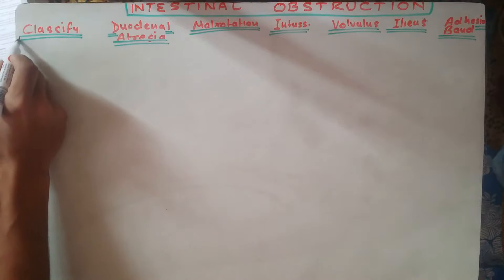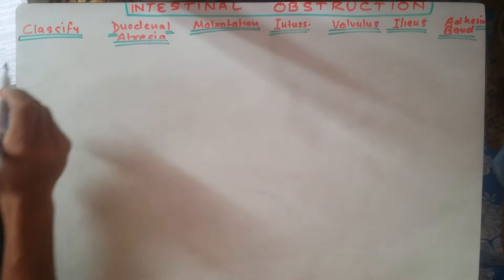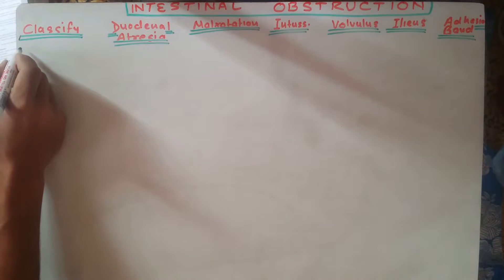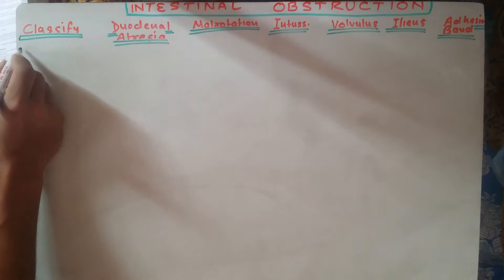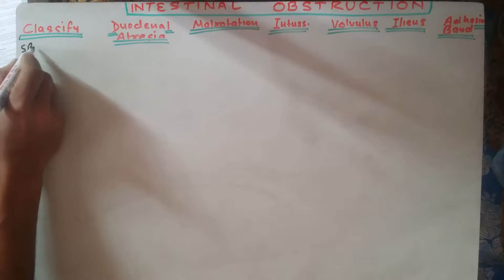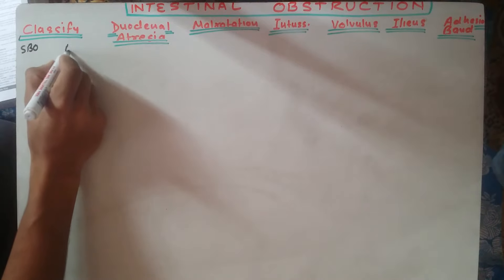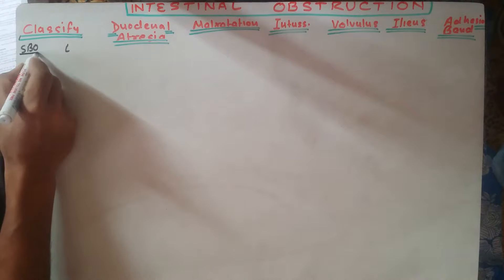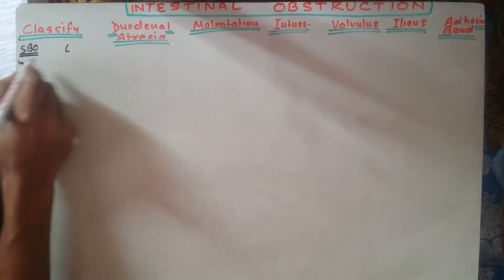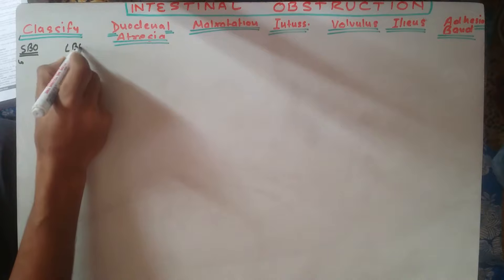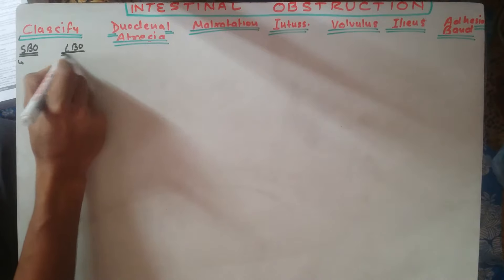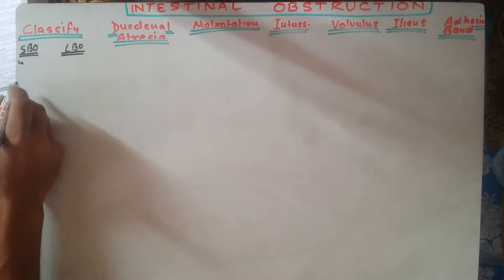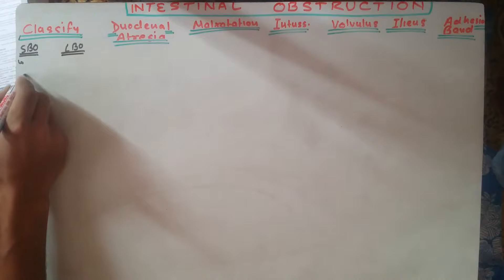There are different types of classification for intestinal obstruction. It can be classified according to the small bowel obstruction or large bowel obstruction. The important clinical presentation of small bowel obstruction is vomiting, whereas large bowel obstruction presents with distension of the abdomen.